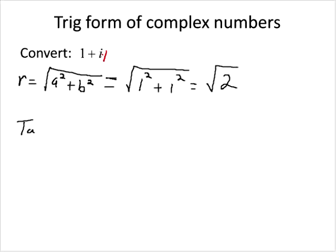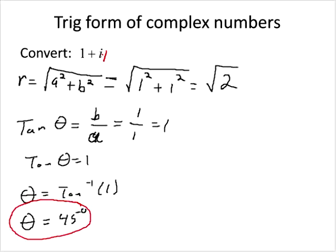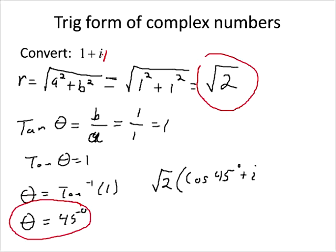Now I need to find the angle. The tangent of theta equals B over A, which is one over one, or one. So I know tangent theta equals one, meaning theta equals the arctangent of one. Looking at the unit circle, the arctangent of one is 45 degrees. So I now have theta and R, and I'm able to rewrite this in trig form: square root of two times the quantity cosine of 45 degrees plus i times sine of 45 degrees. I've just converted 1+i into trig form.